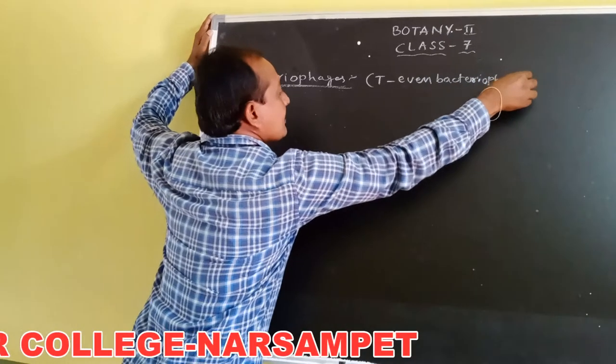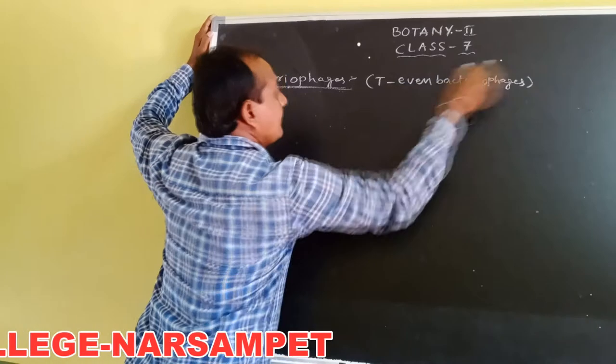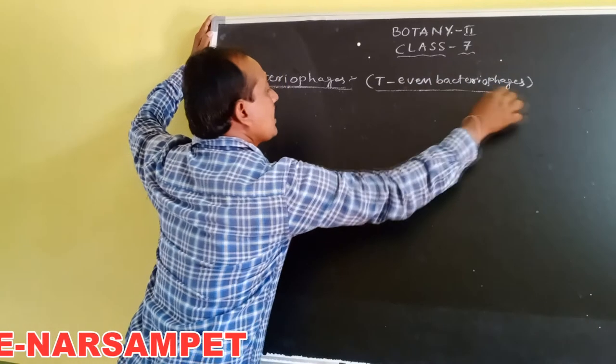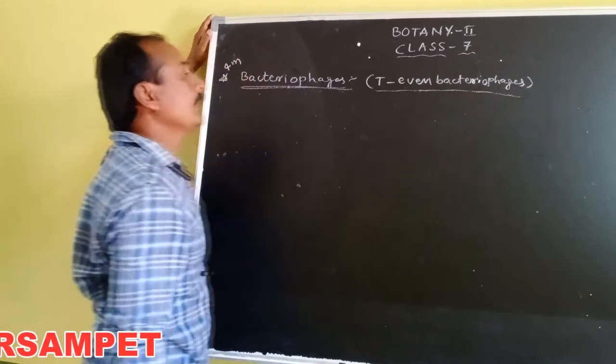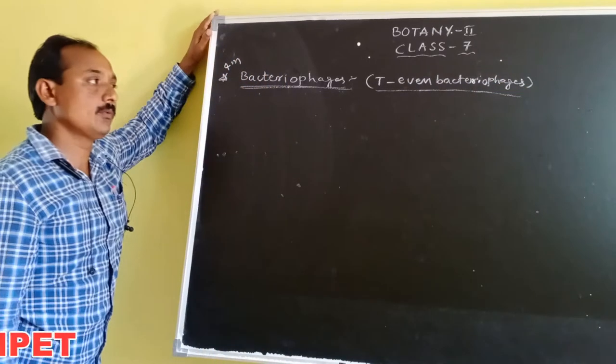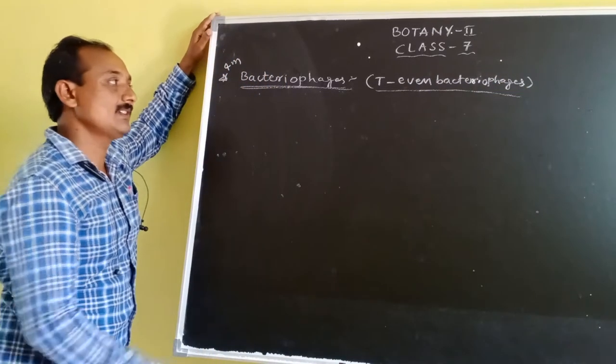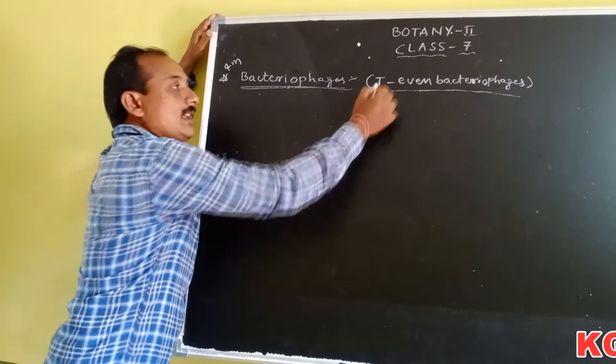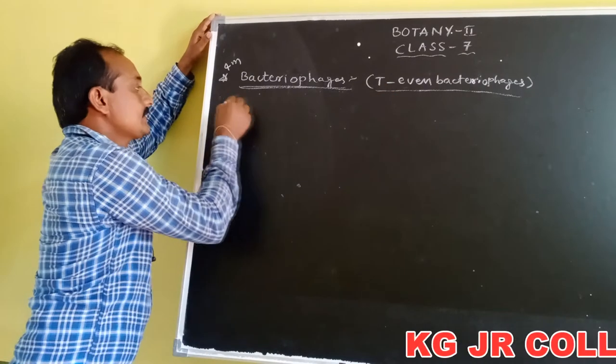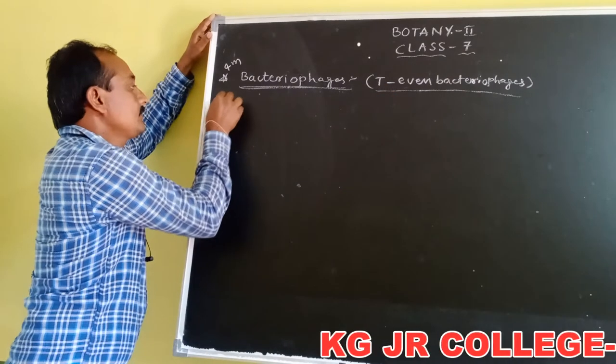First, describe the structure of T-even bacteriophages — T-2, T-4, T-6 — the even numbers. T-even bacteriophages.